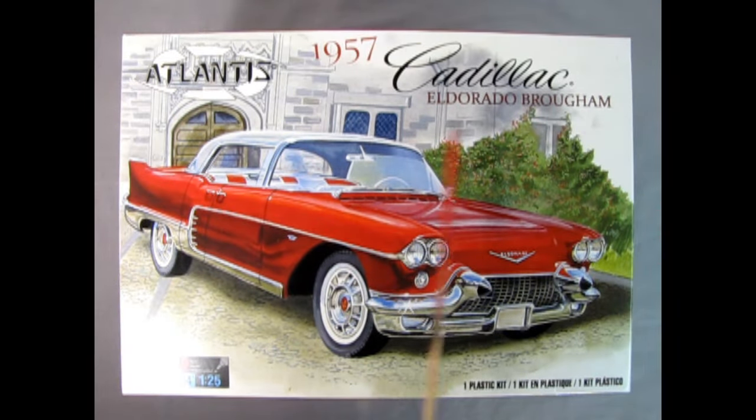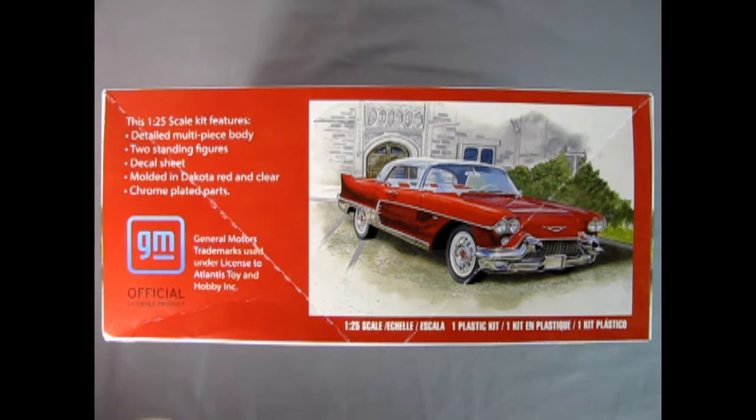The Atlantis 1957 Cadillac Eldorado Brougham is a 1/25th scale model kit, skill level 2 for ages 14 and up. This model kit was originally released by Revell in 1957, so the mold process is different. On this side of the box we can see our wonderful Cadillac sitting in front of this beautiful building in the back. This 1/25th scale kit features a detailed multi-piece body, two standing figures, decal sheet, is molded in Dakota red and clear and has chrome plated parts.